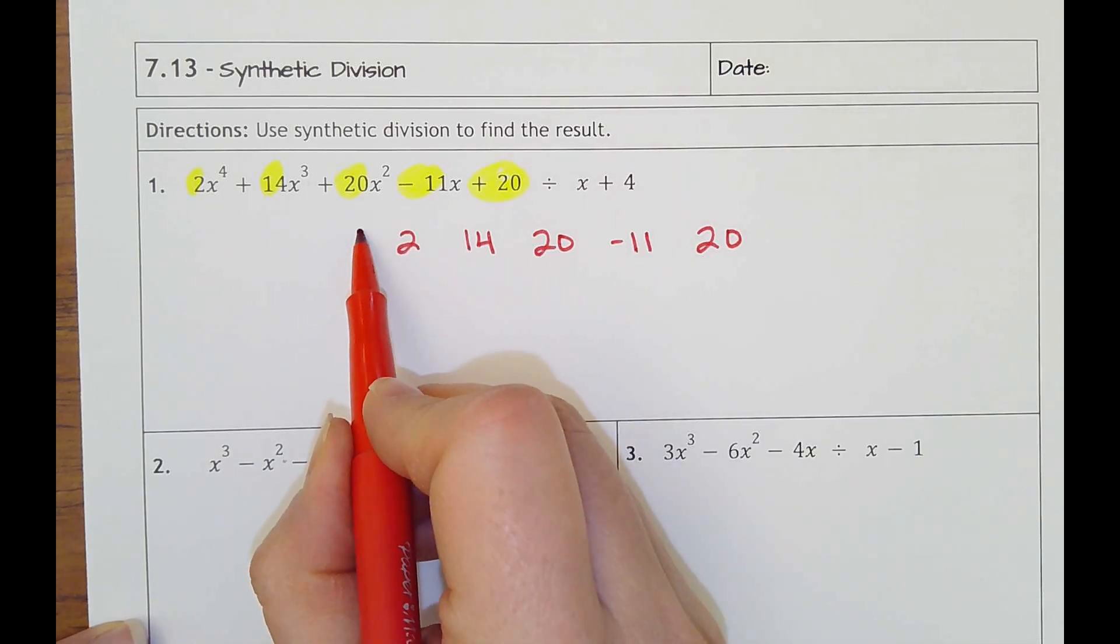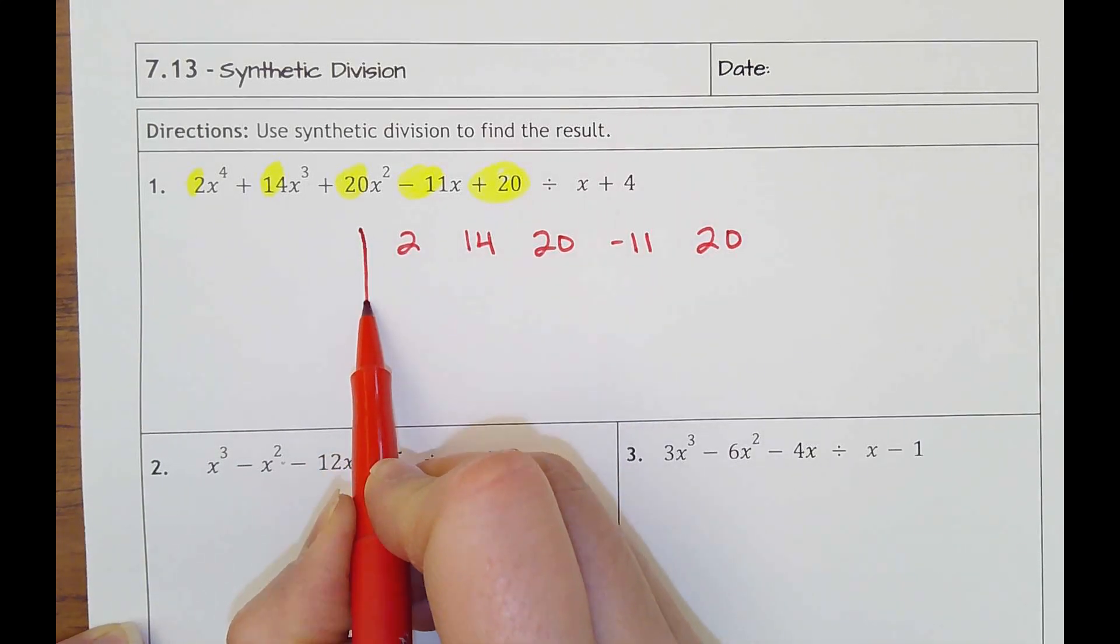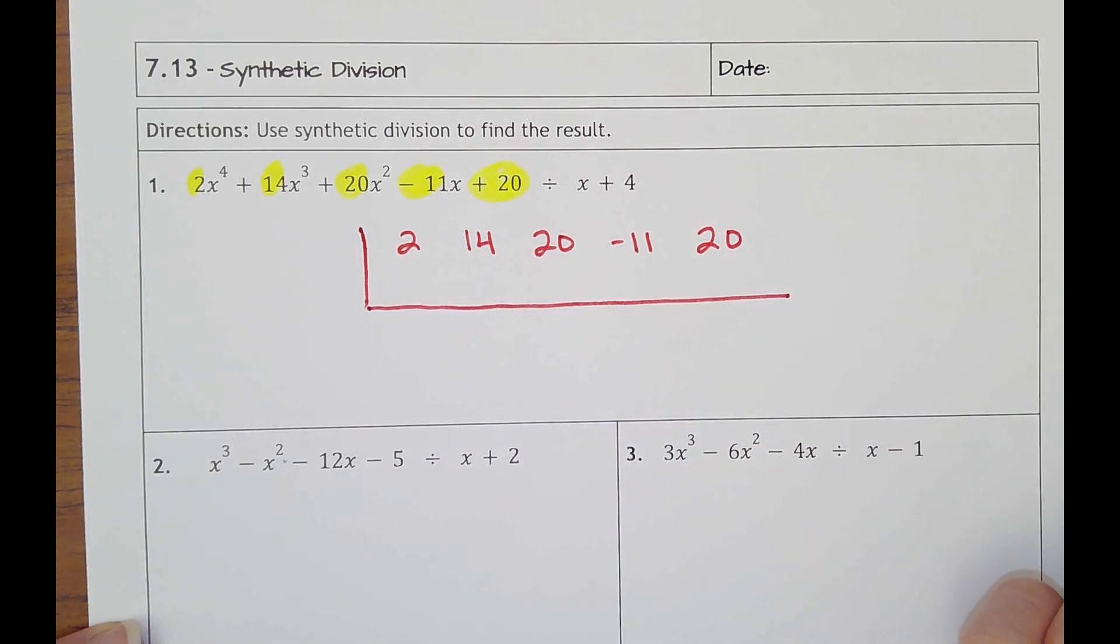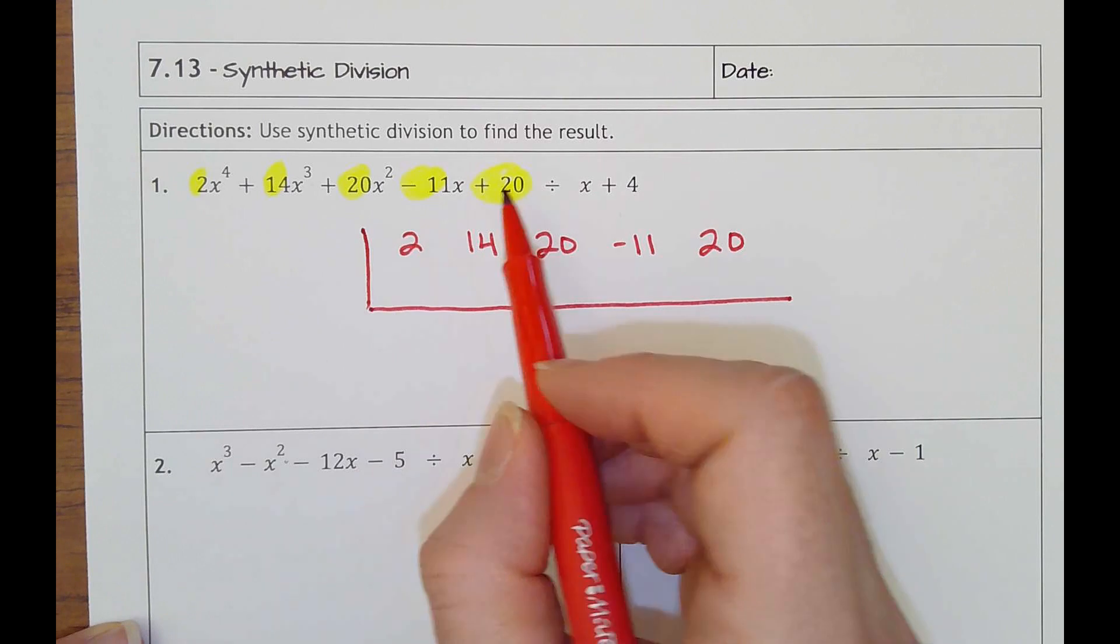Then what I want you to do is make like a big L. I'm going to leave some space under the numbers and then go across like this.